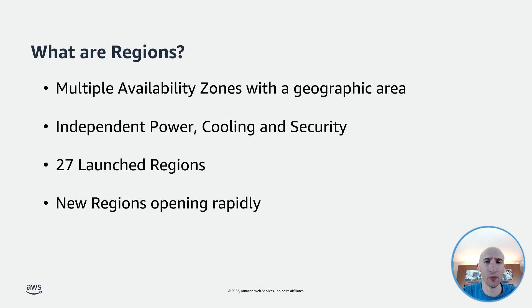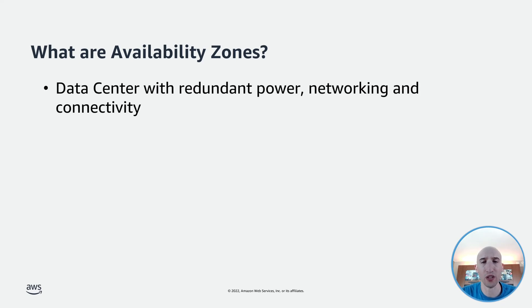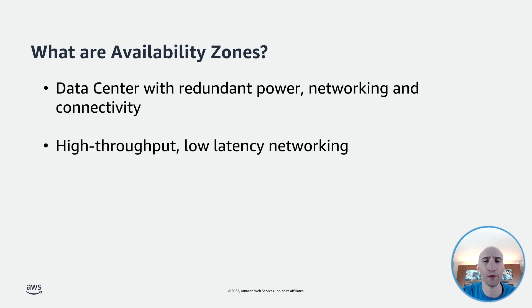So what actually is an availability zone? An availability zone, or AZ for short, is one or more discrete data centers with redundant power, networking, and connectivity in an AWS region. Availability zones give customers the ability to operate production applications and databases that are more highly available, fault-tolerant, and scalable than would be possible from a single data center. All AZs in an AWS region are interconnected with high-bandwidth, low-latency networking over fully redundant, dedicated metro fiber, providing high-throughput, low-latency networking between availability zones. All traffic between AZs is encrypted.